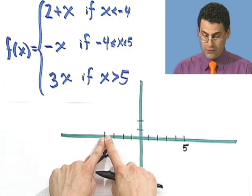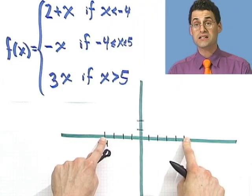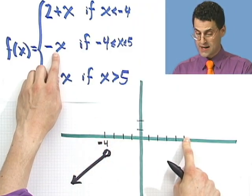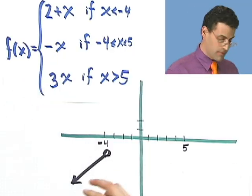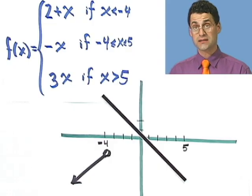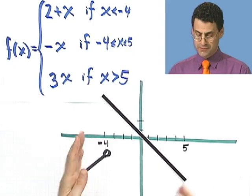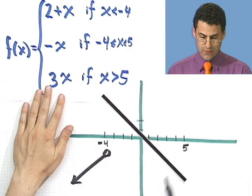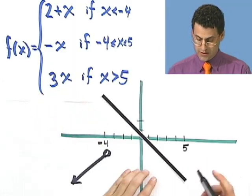What happens now between minus 4 and 5? Well, between minus 4 and 5, I'm negative x. And negative x, I remind you, just looks like this. But I only want that between this region. So, in fact, what I want to do is, well, I'm going to start up here, minus 4.